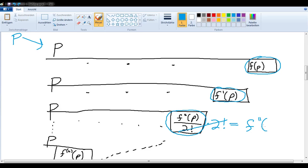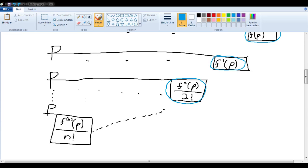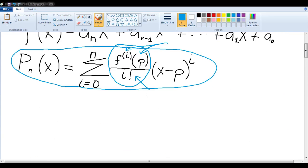So if we continue that process, we also have the nth derivative of f evaluated at p divided by n factorial. So these are exactly the values that we will need to plug in to form our Taylor polynomial.